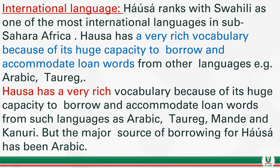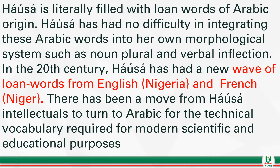This makes Hausa the most international language of the three major languages, with a population of over 35 million speakers. Hausa ranks with Swahili as one of the most international languages in sub-Saharan Africa. Hausa has a very rich vocabulary because of its huge capacity to borrow and accommodate loanwords from Arabic, Tuareg, Mande, and Kanuri. The major source of borrowing for Hausa language has been Arabic, and Hausa is literally filled with loanwords of Arabic origin.